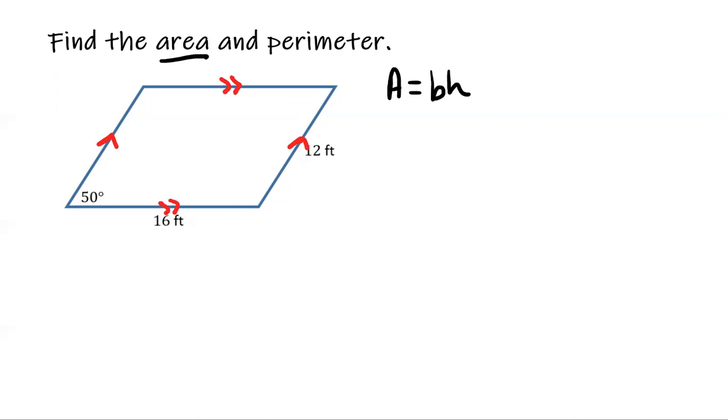Now perimeter is pretty simple. You just have to add up the sides, right? So add up four sides, that's what we have to do. So perimeter is the distance around the thing which we already know.